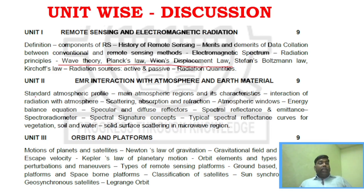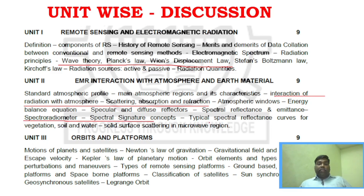Unit 2: You have to go through the interaction of radiation with the atmosphere — this is definitely a question. Apart from it, all these are very important areas: spectral radiance, spectral reflectance diameter, and similarly typical spectral reflection curves — these are confirmed questions.